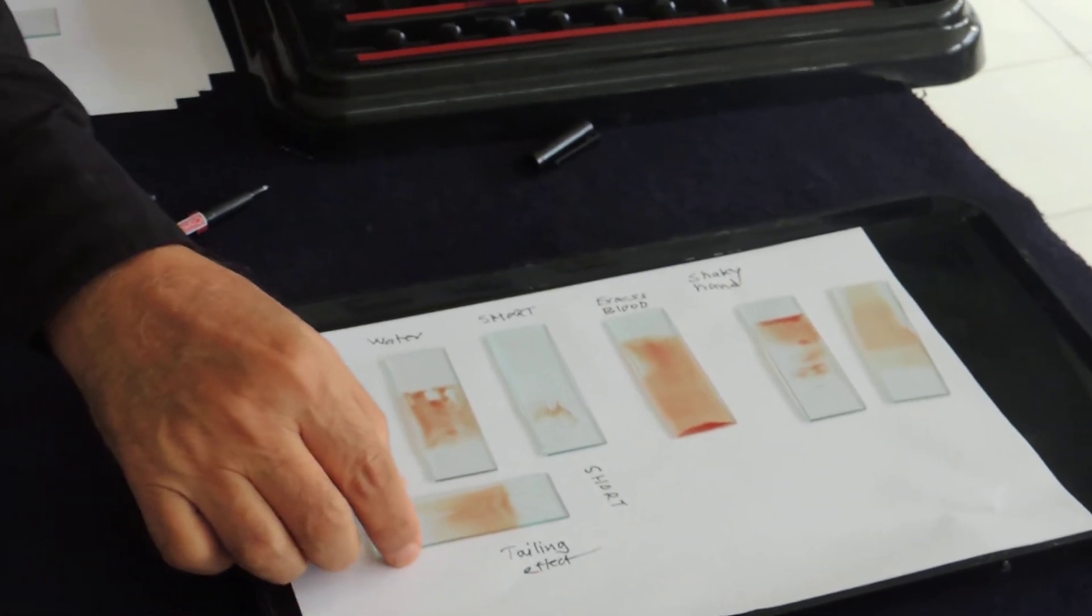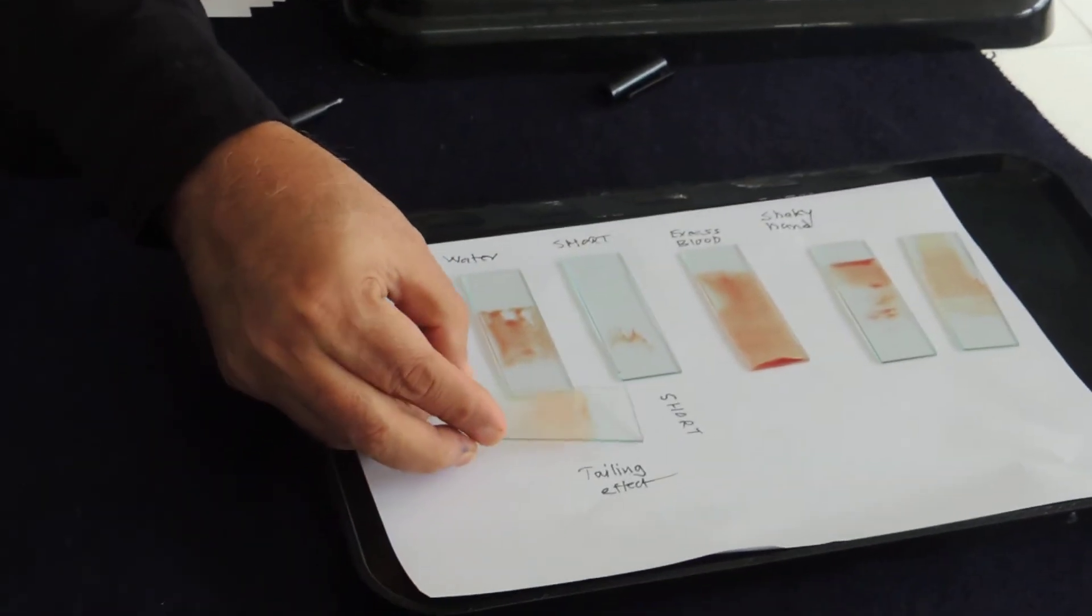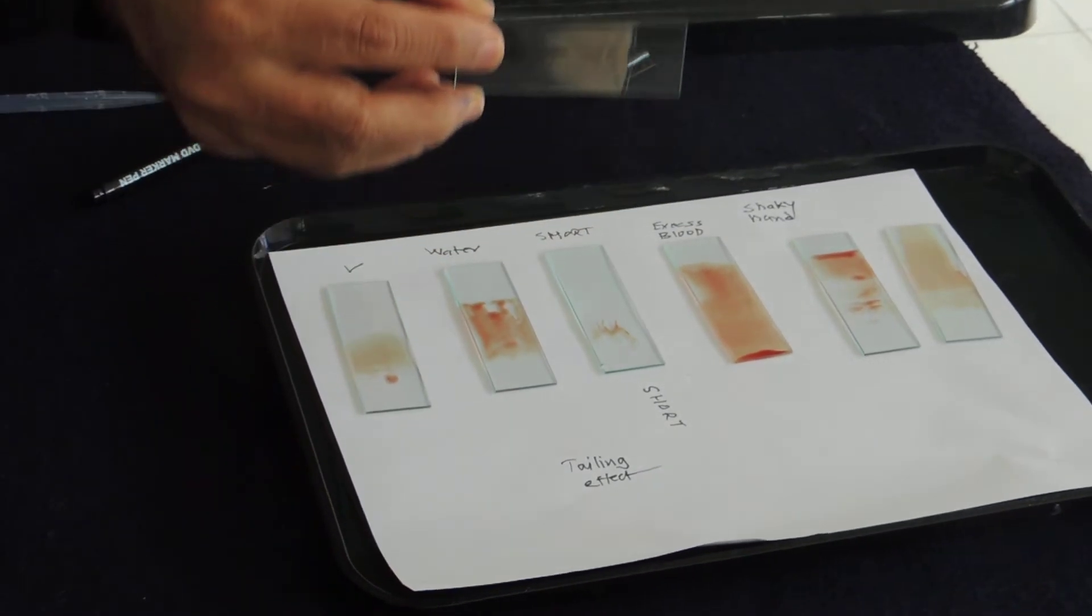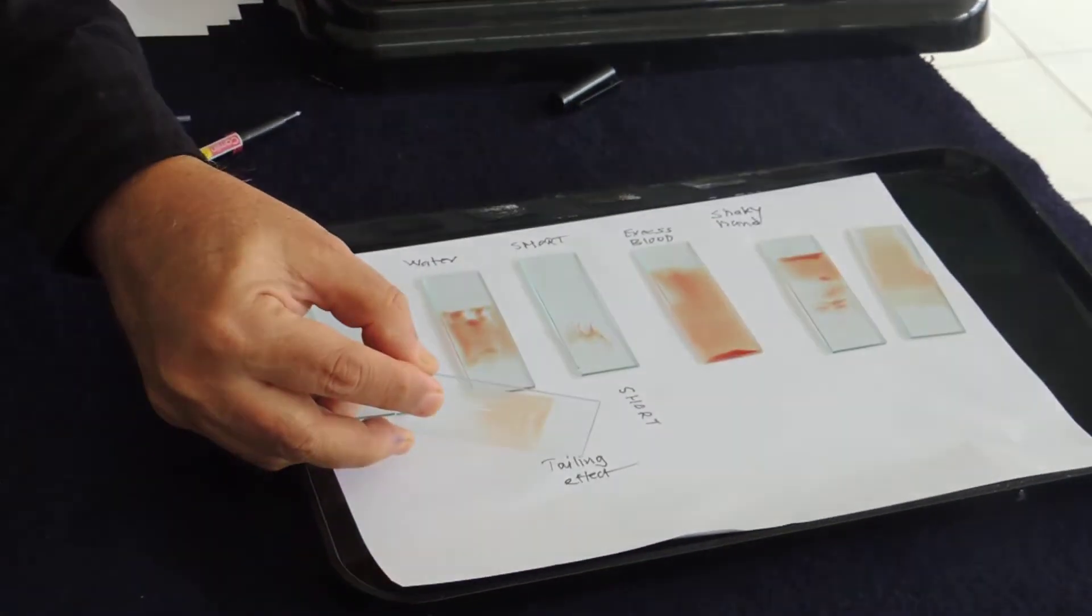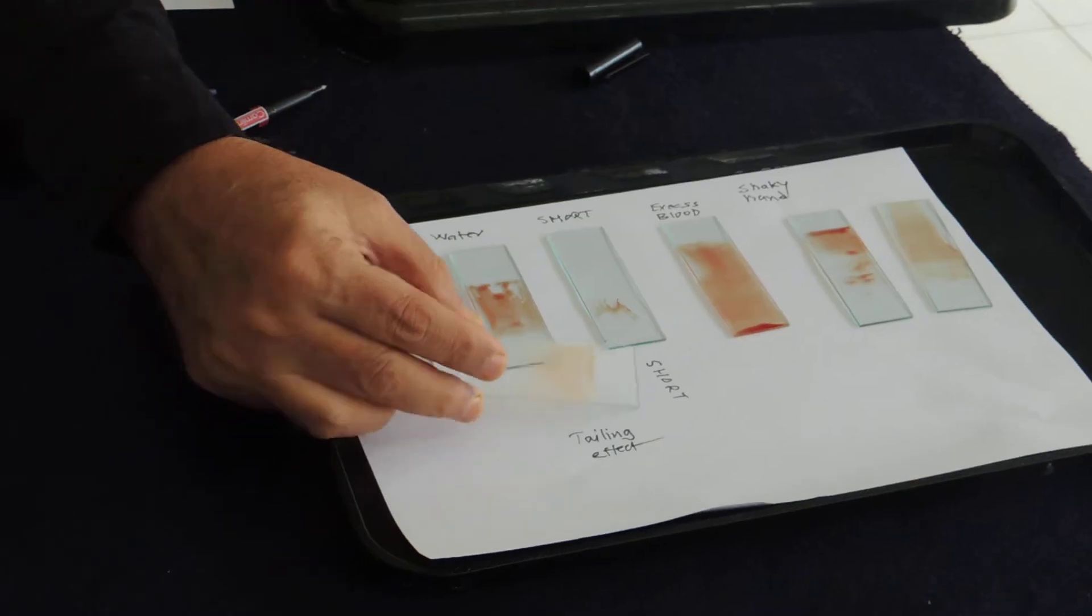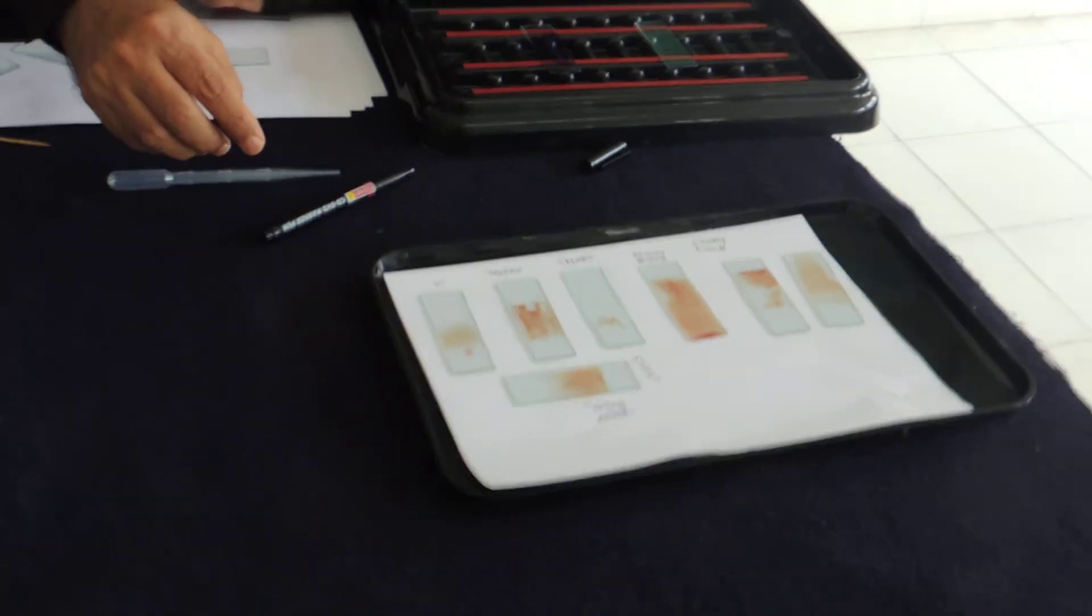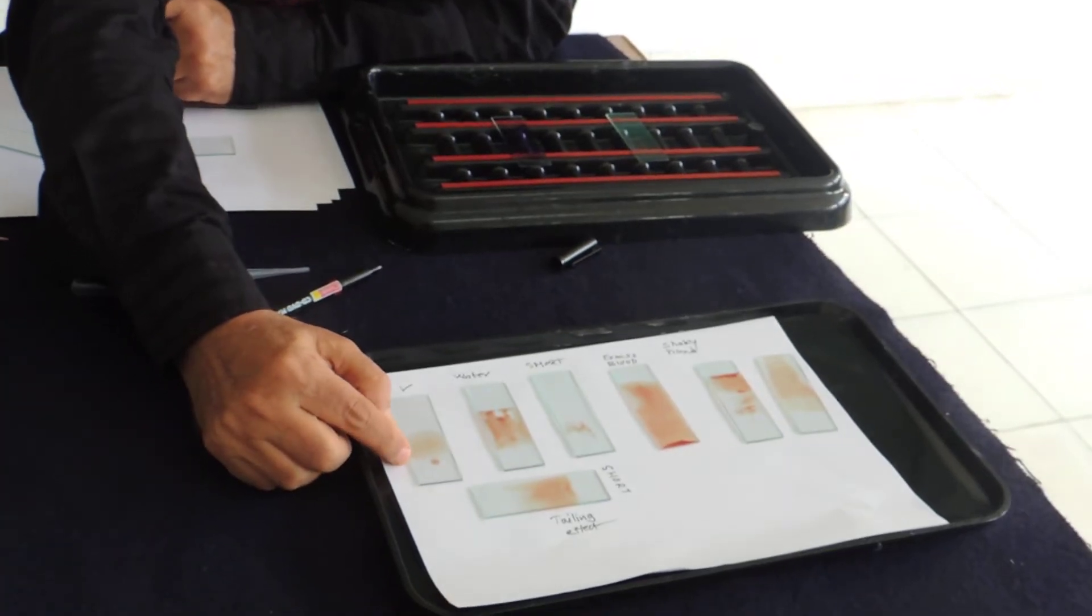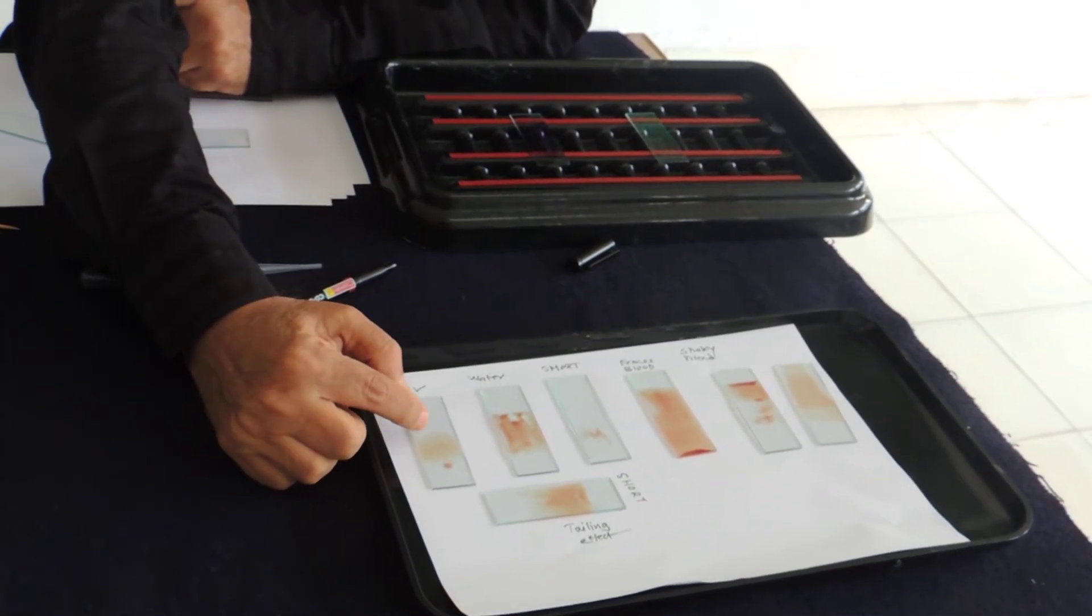If the end of the slide is like this, then this is known as tailing effect, serrated end. So this should not be there. Serrated end slide should not be there. So what we have to achieve is the smear which is having head, body and tail.